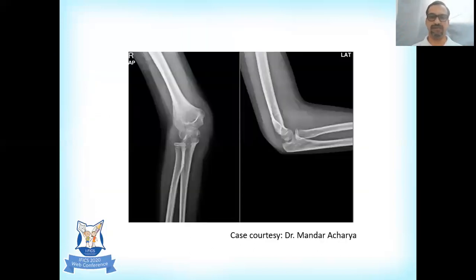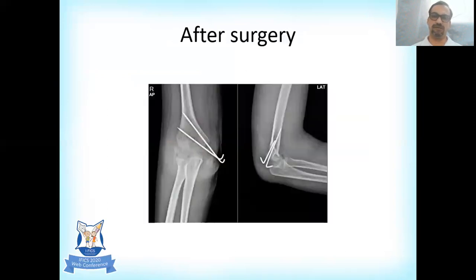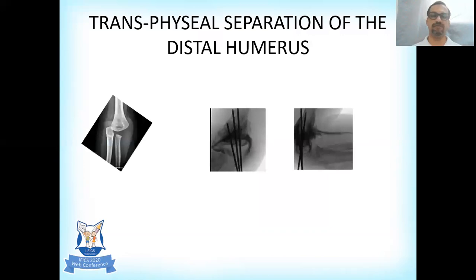Here is an example of a 7-year-old boy with suspected medial epicondyle injury. Arthrogram was done, which showed the fragment was trapped inside the joint. Open arthrotomy was performed, the fragment was removed, and it was fixed with K-wires. Coming back to the two x-rays from the beginning — the neonate had a transphyseal separation of the distal humerus, treated with closed reduction, intraoperative arthrogram confirming the diagnosis, and percutaneously placed K-wires.